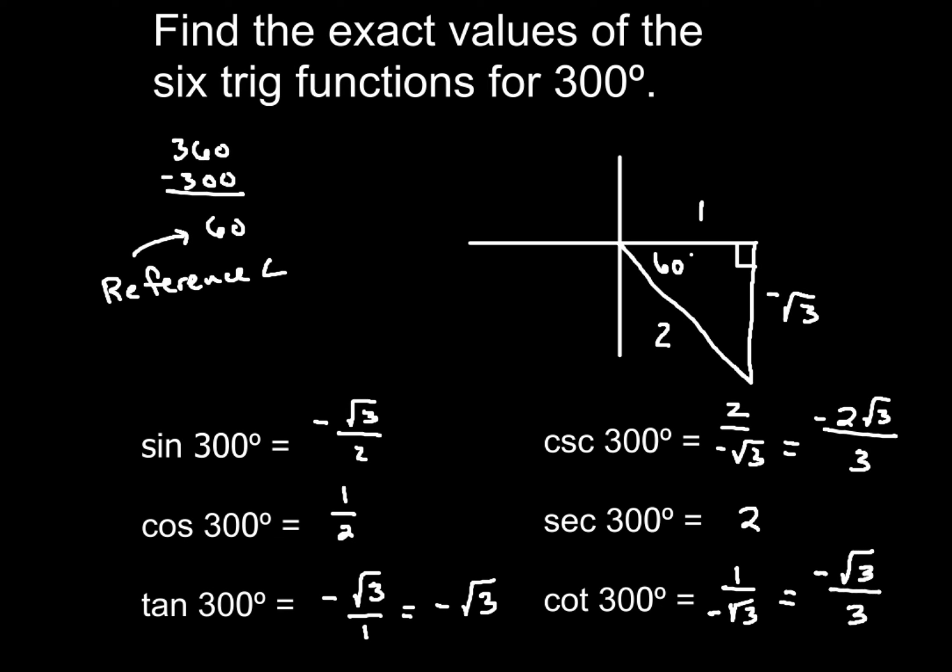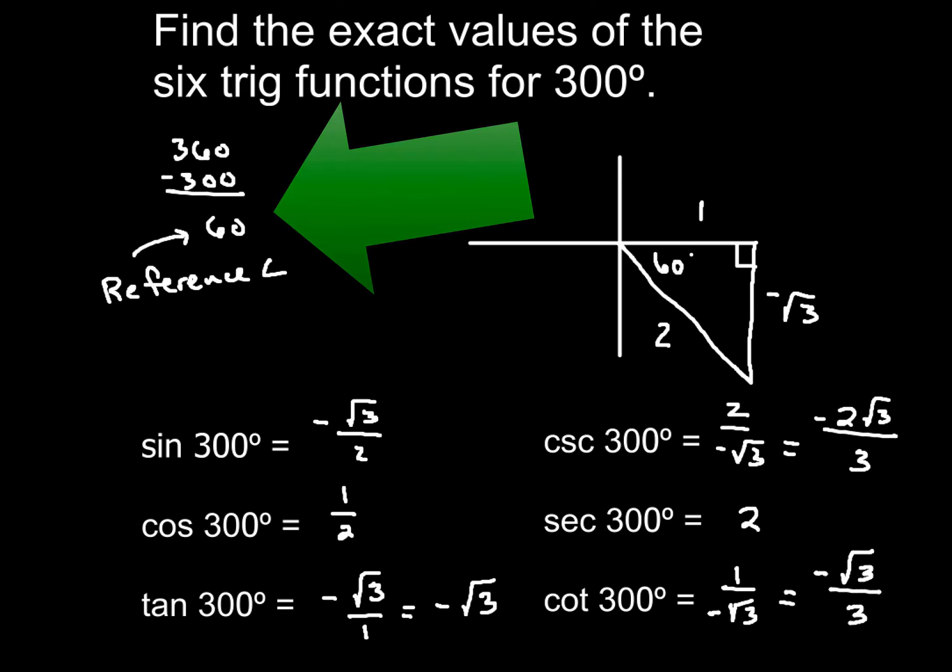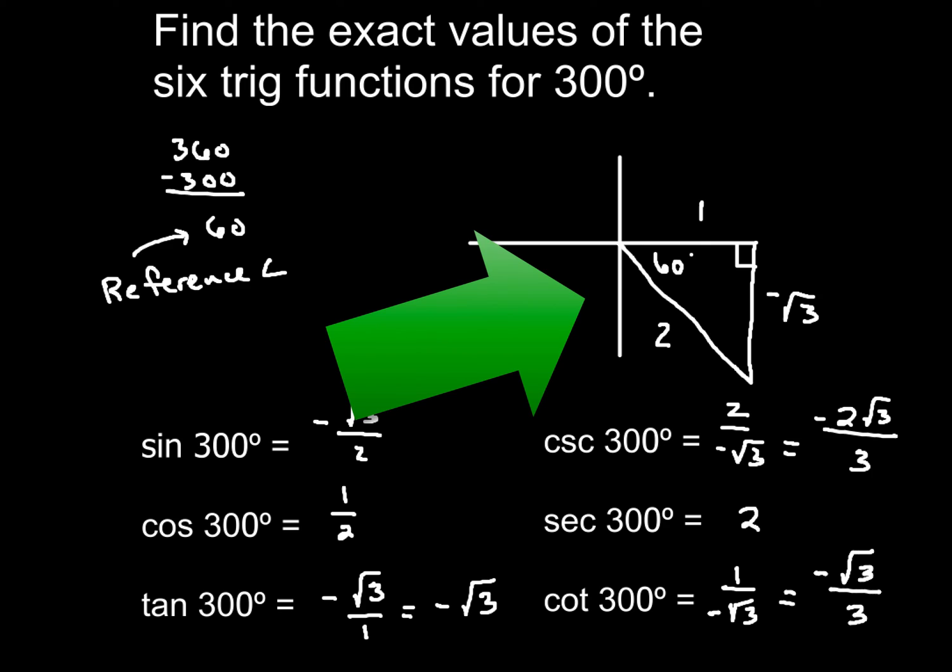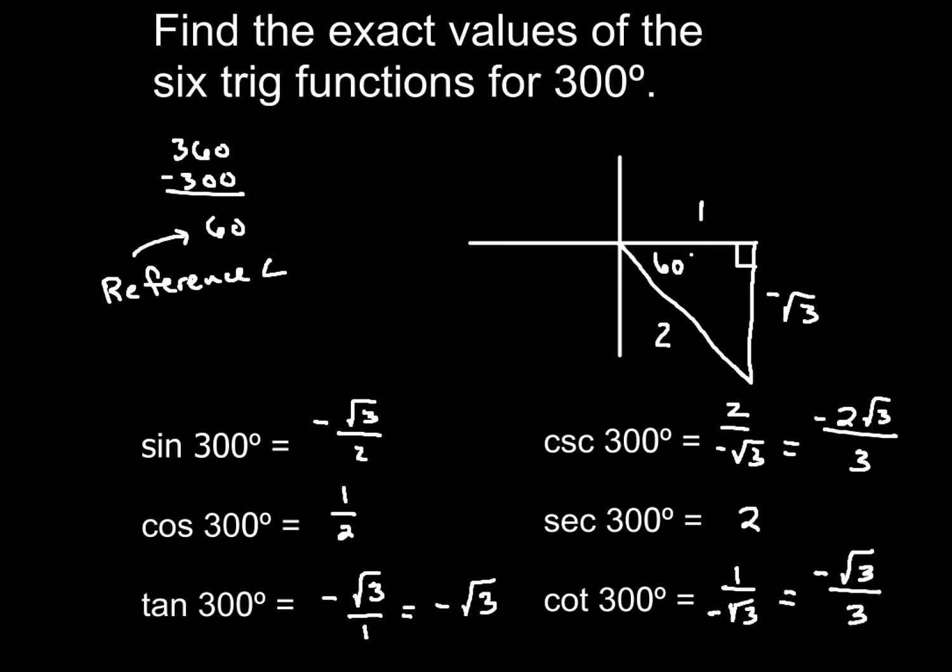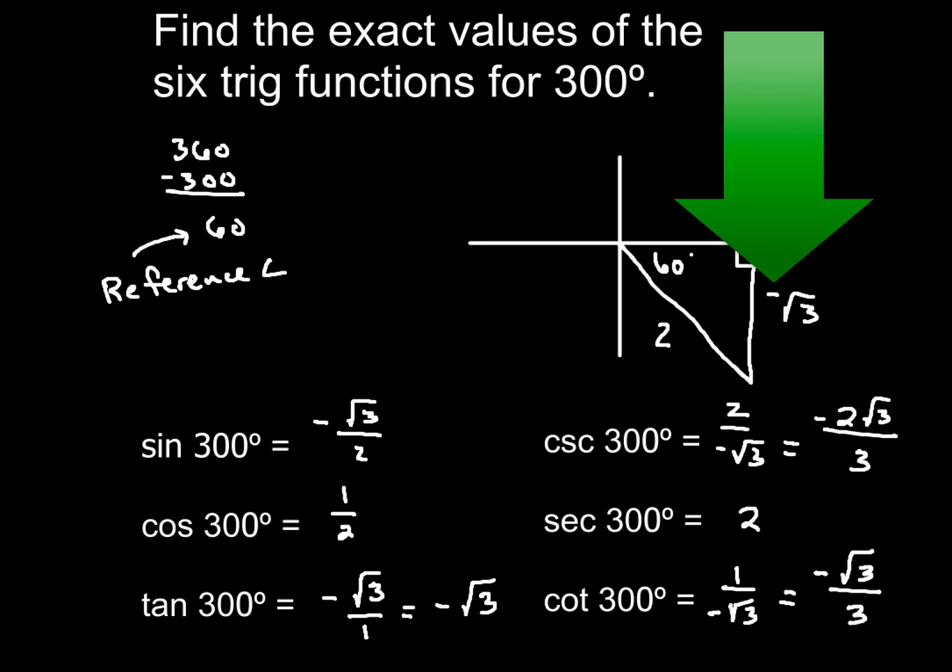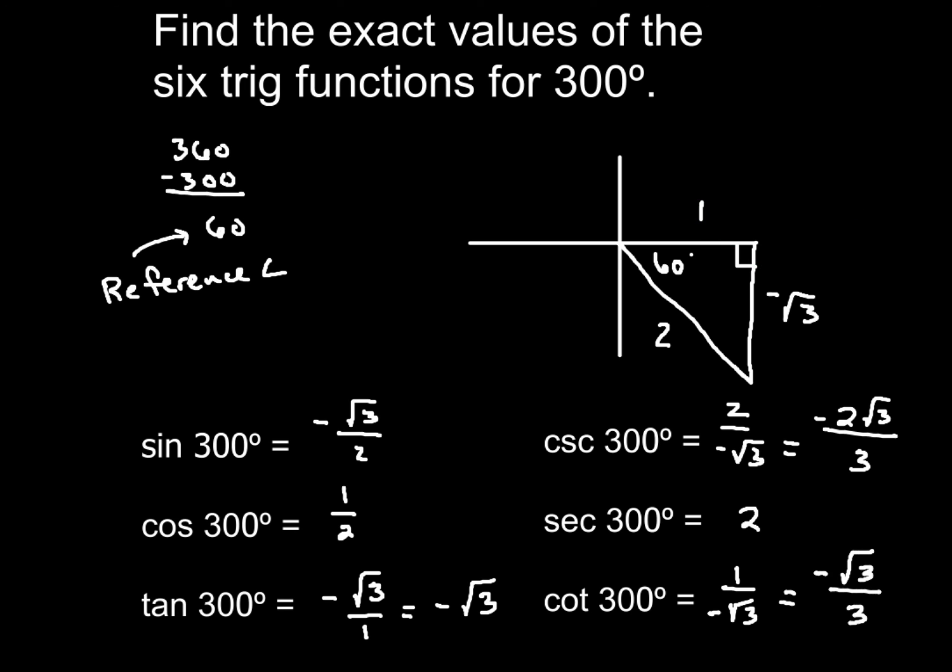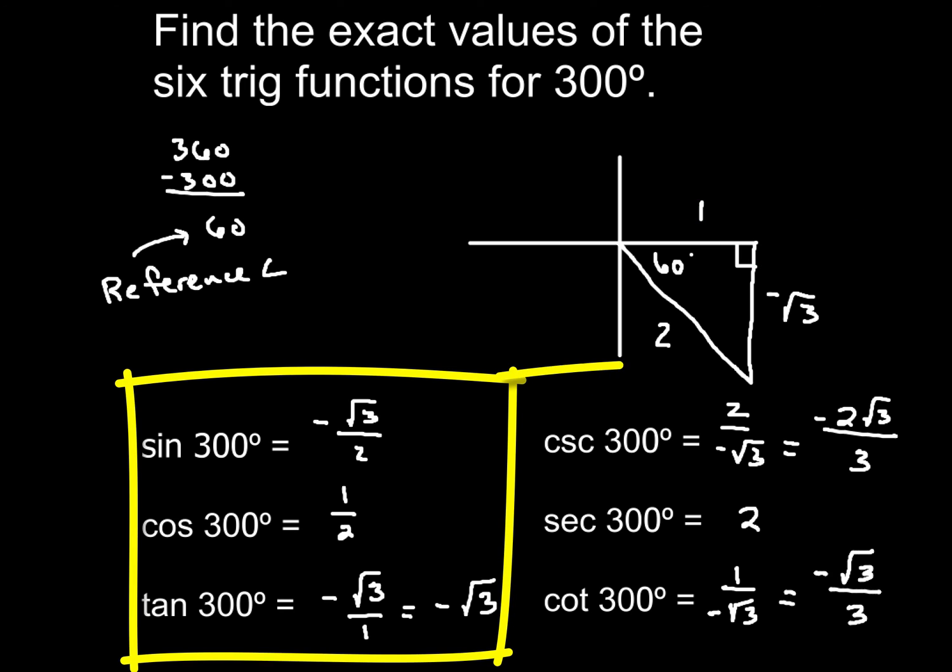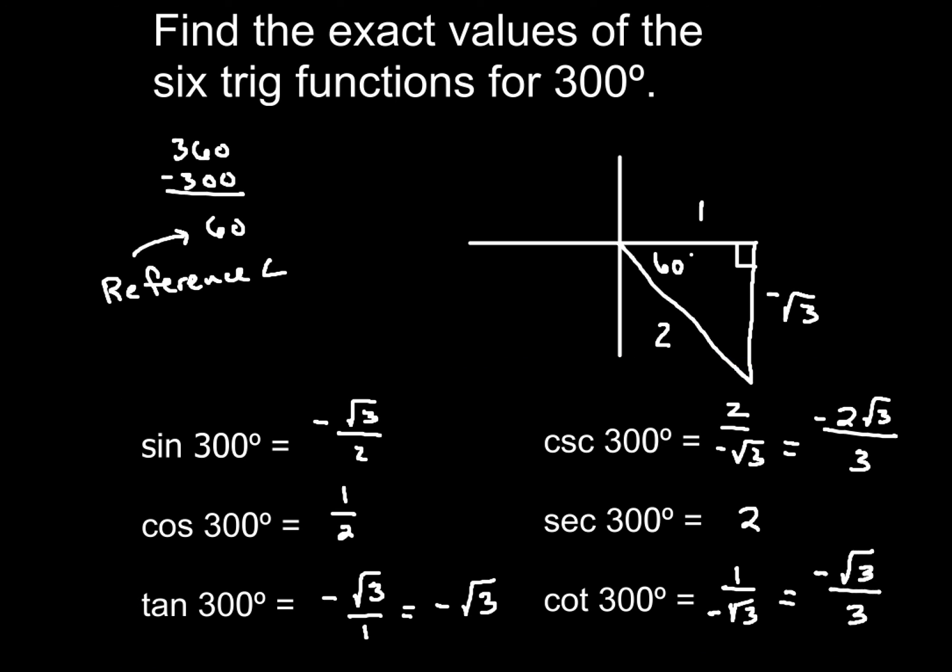All right, so how'd you do with this one? Did you get the reference angle of 60 degrees? Is your reference triangle drawn in quadrant number four? And did you make sure to add a negative sign across from the 60 where you have the y coordinate for negative square root of three? If you did that correctly, then I'm sure you found the sine, the cosine, the tangent, cosecant, secant, and cotangent of 300 degrees correctly.